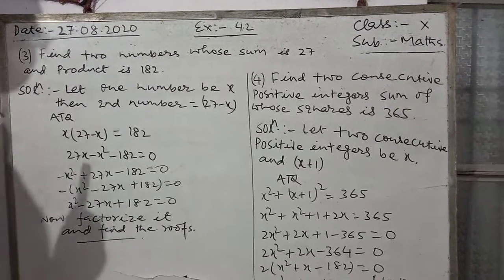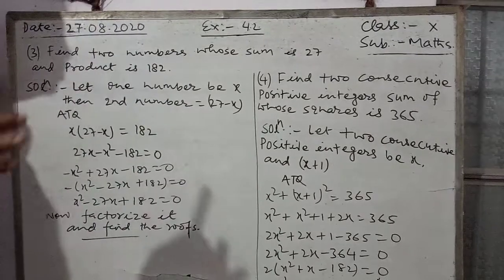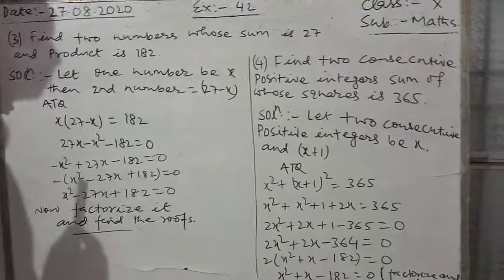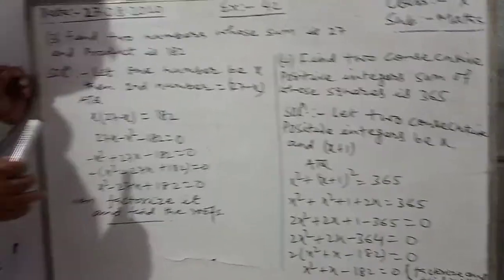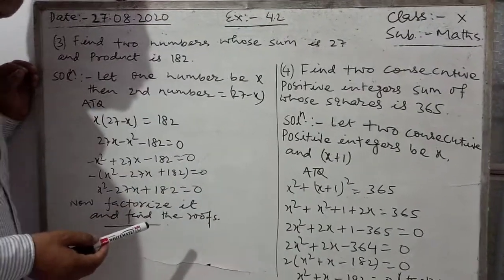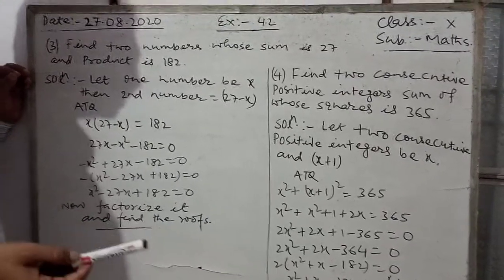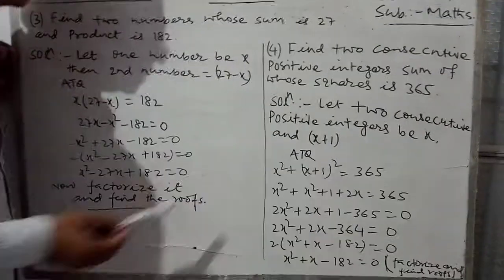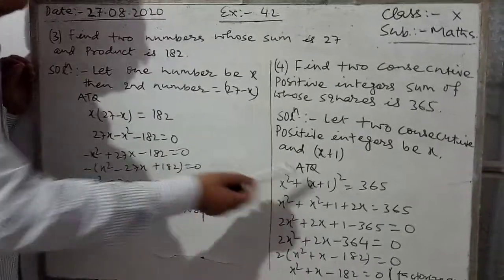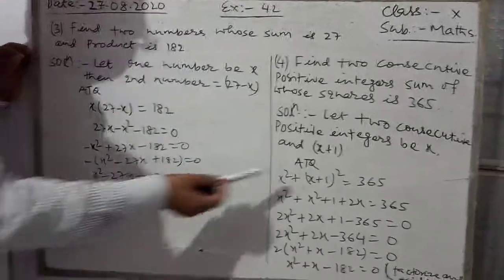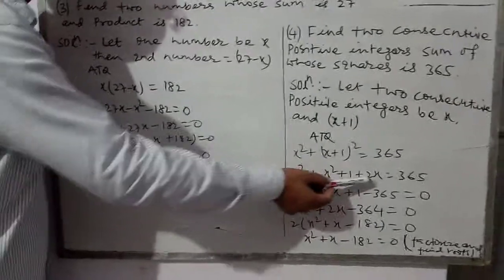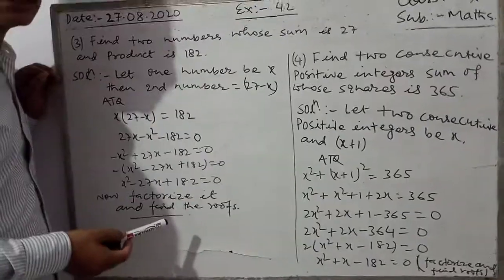According to the question, the sum of their squares is 365. So we write x squared plus (x plus one) squared equals 365. We expand this using the formula: (a plus b) whole squared equals a squared plus 2ab plus b squared.